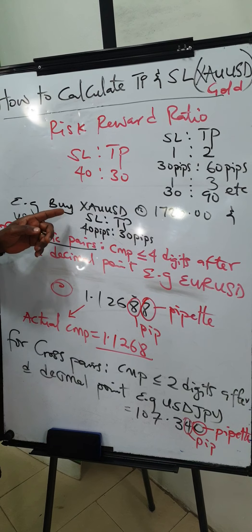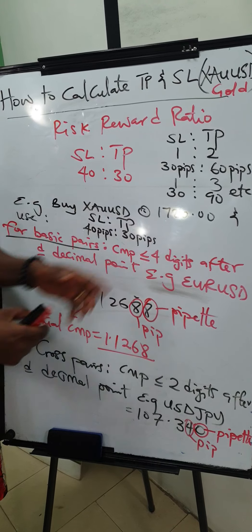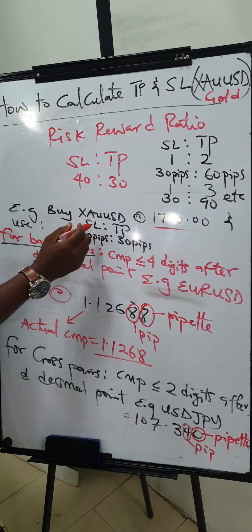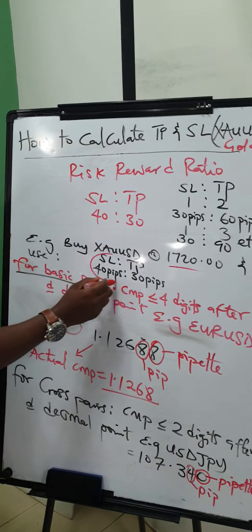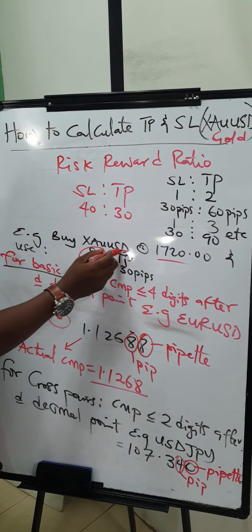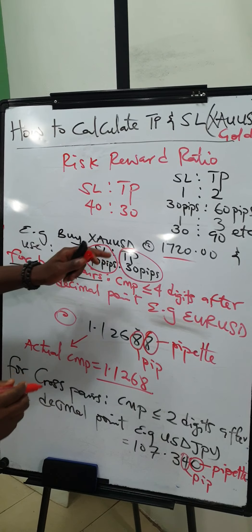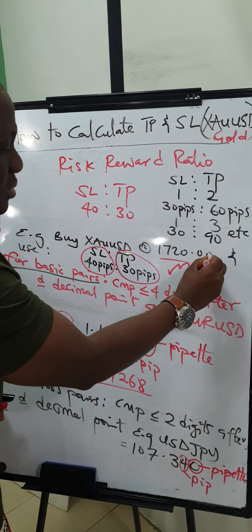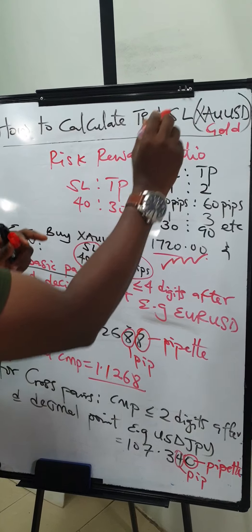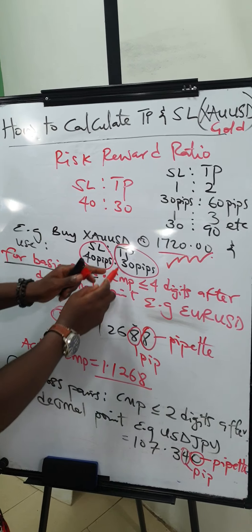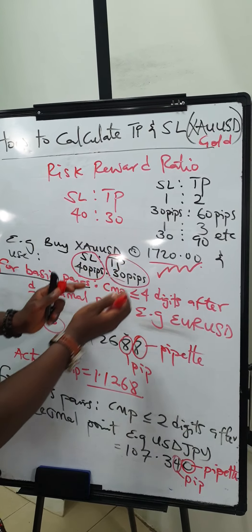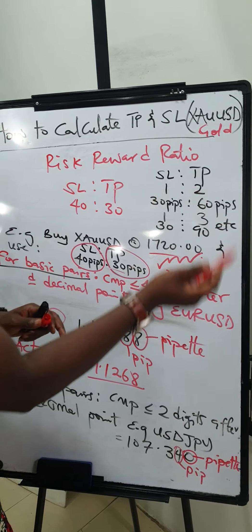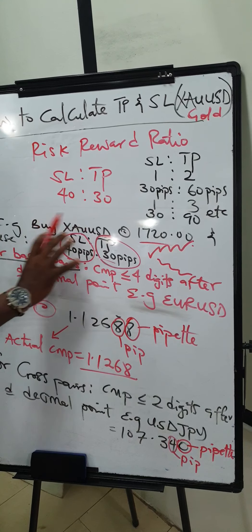For example with gold: buy gold at $1,720. Set your stop loss at 40 pips and your take profit at 30 pips. If you click buy and gold goes up, the trade closes when it reaches 30 pips of appreciation. But if it goes down, you will not lose more than 40 pips. That is the meaning of this setup.